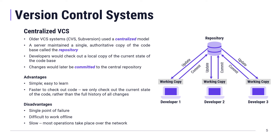Older version control systems used a centralized model with a central server that everyone connected to. All source code was in that repository, and developers would check out a working copy — just the current state of the code — work on it, and commit changes back. This model is simple, easy to learn, and fast to check out because you're only getting the current snapshot, not the entire history.